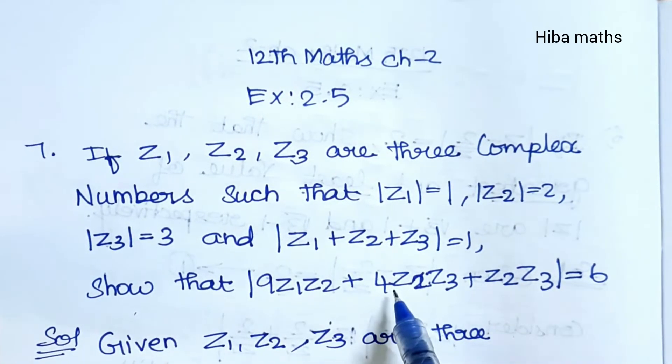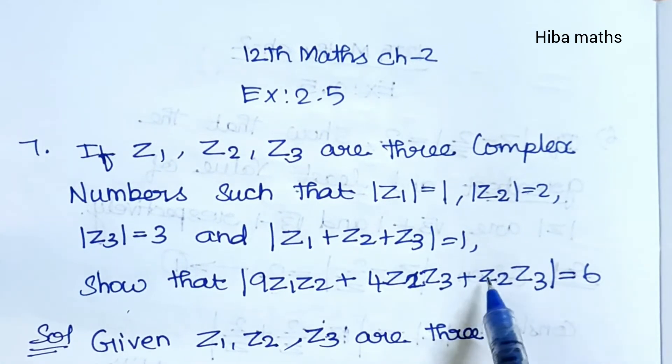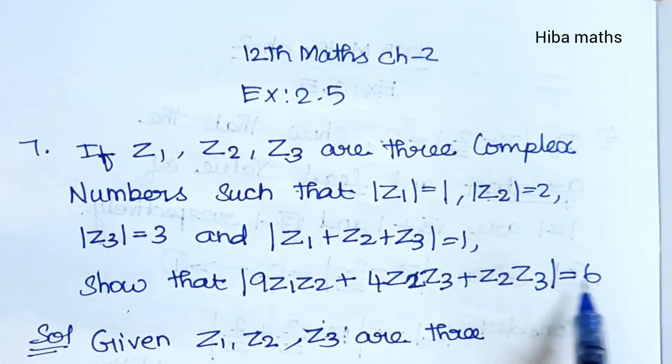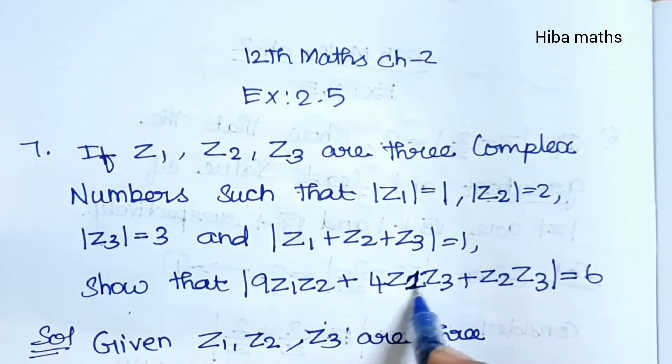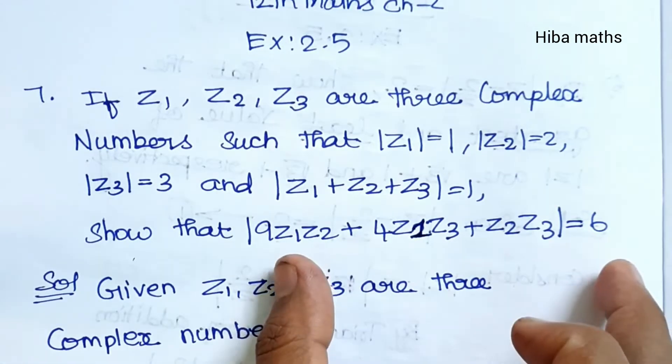Show that 9Z1Z2 plus 4Z1Z3 plus Z2Z3 is equal to 6. This is what we need to prove.